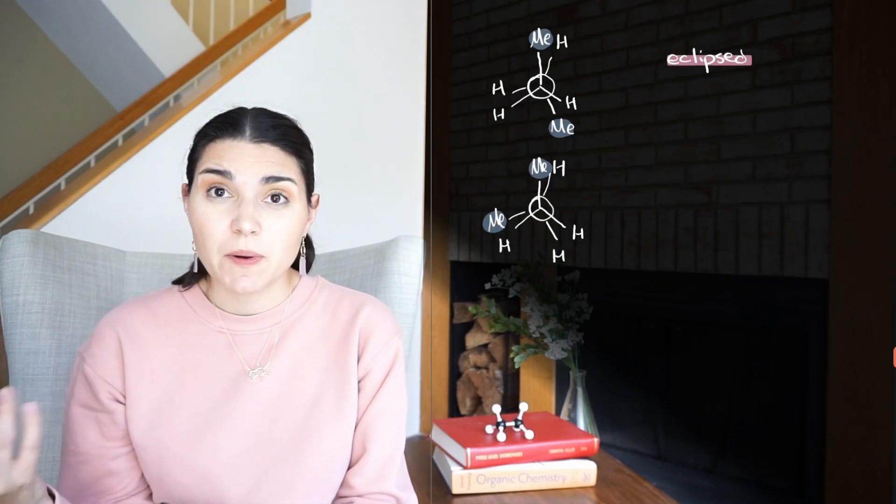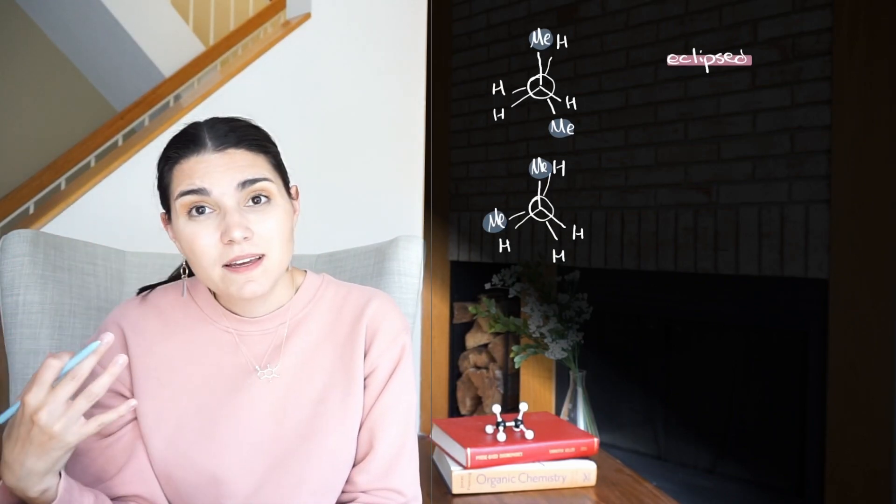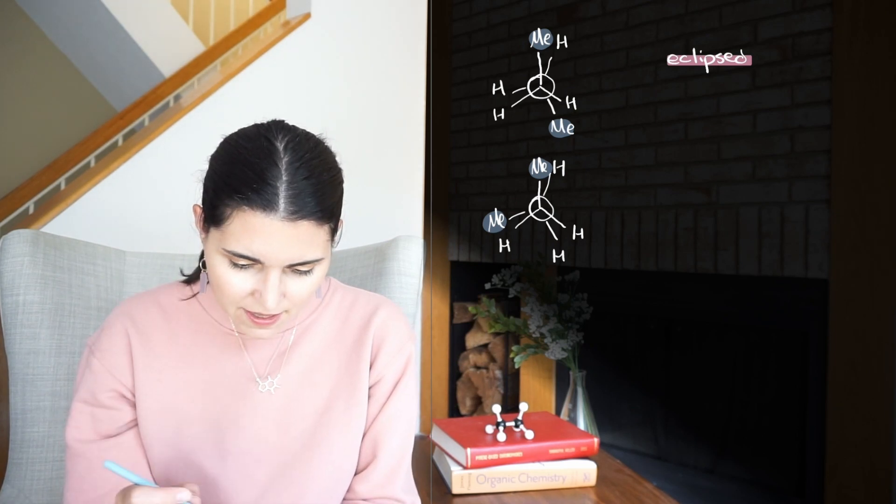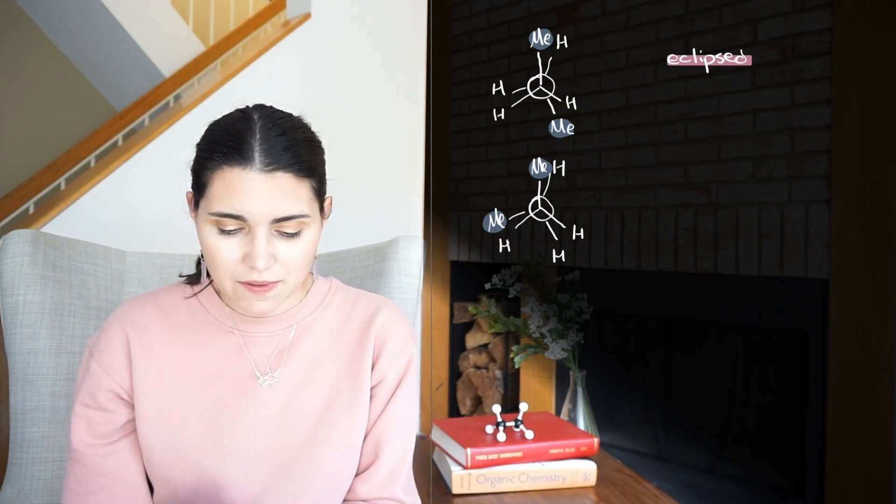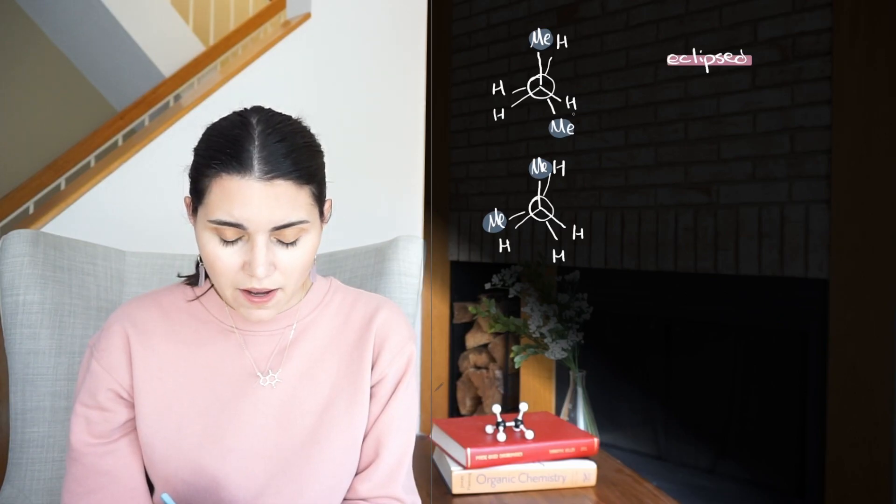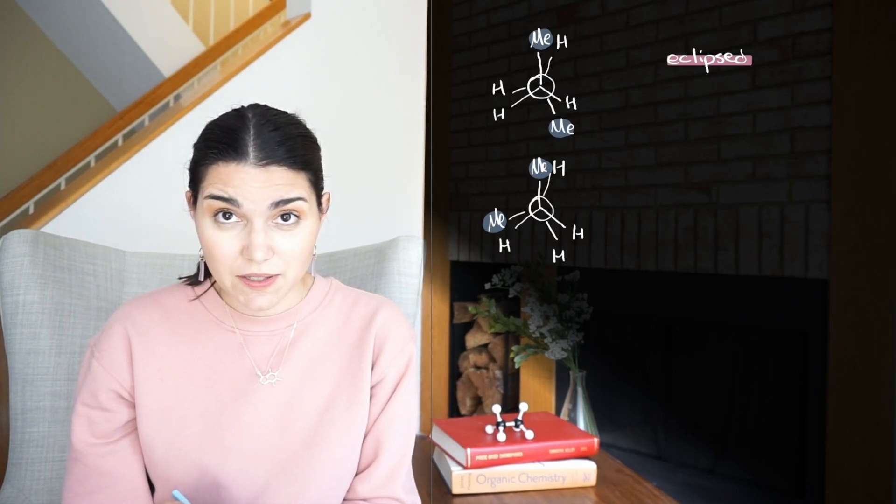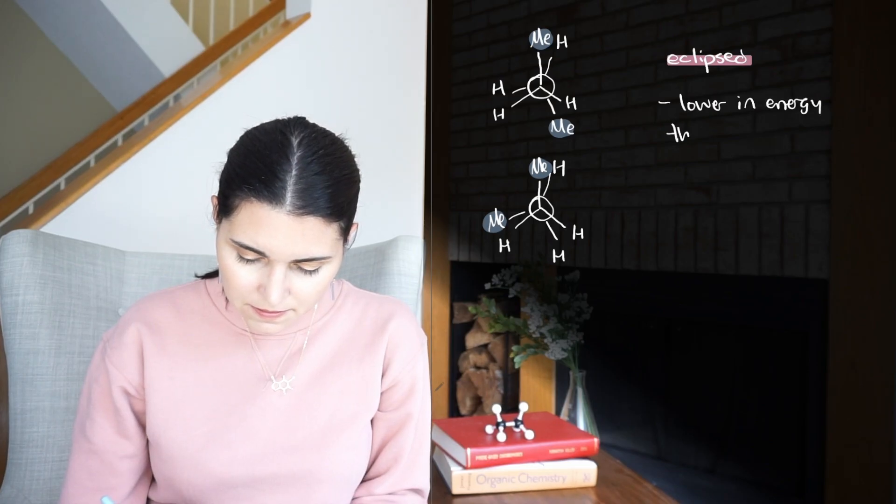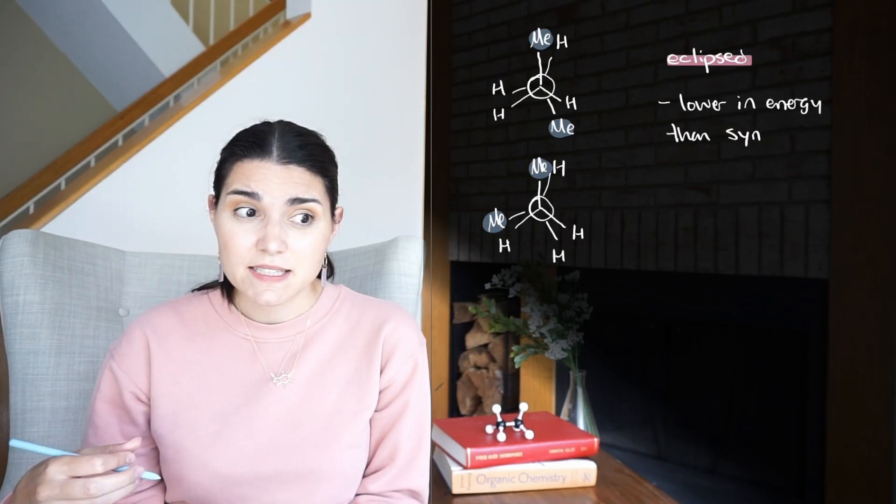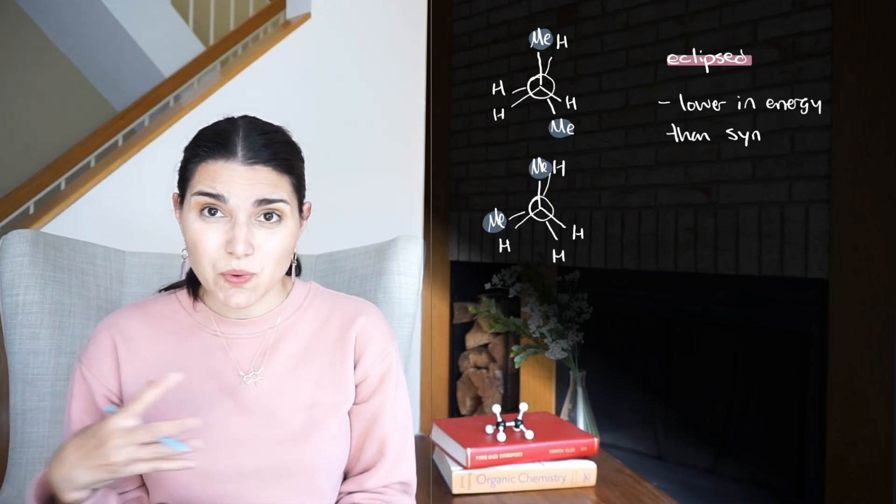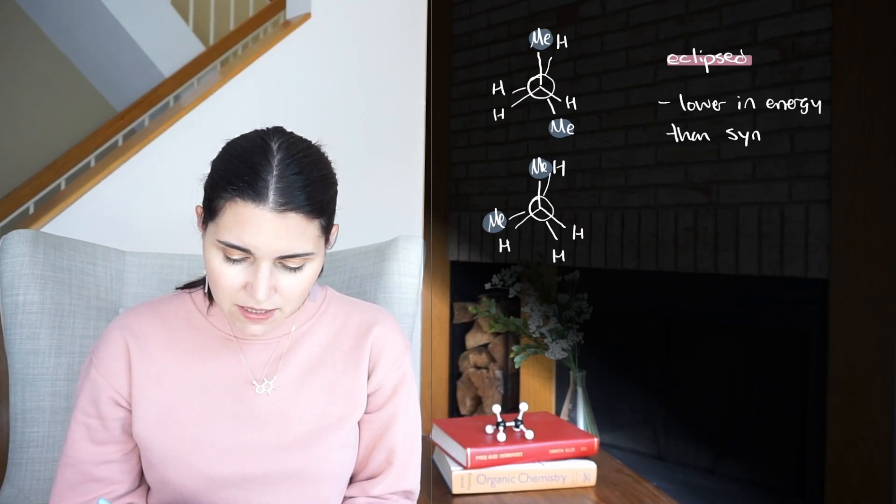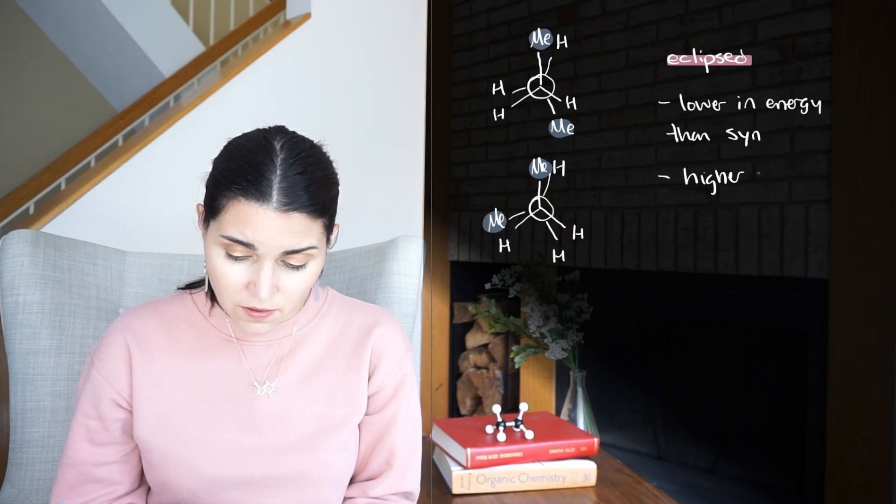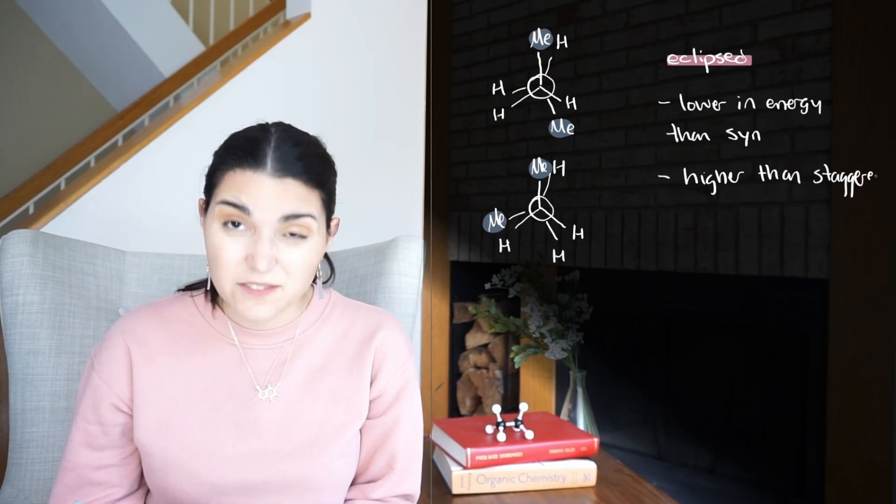We're going to move on and talk about the regular eclipsed conformation. This one is not so bad. We can see that our methyl group is eclipsing with hydrogen, this other methyl group is eclipsing with hydrogen, and then these two hydrogens are eclipsing. The regular eclipsed conformations are lower energy than the syn, because at least in this case, the two methyl groups are not getting in each other's way sterically. But they're higher in energy than all of the staggered conformations because they still have torsional strain.